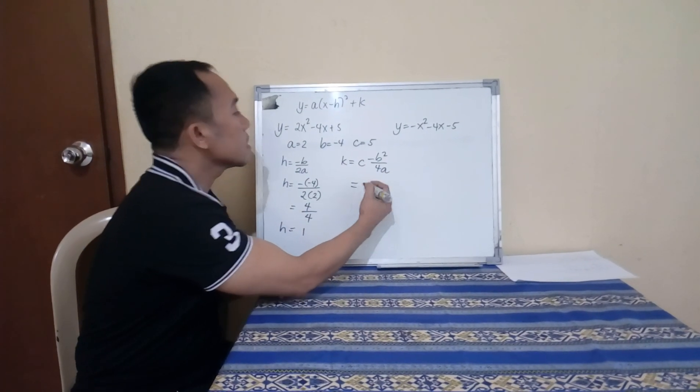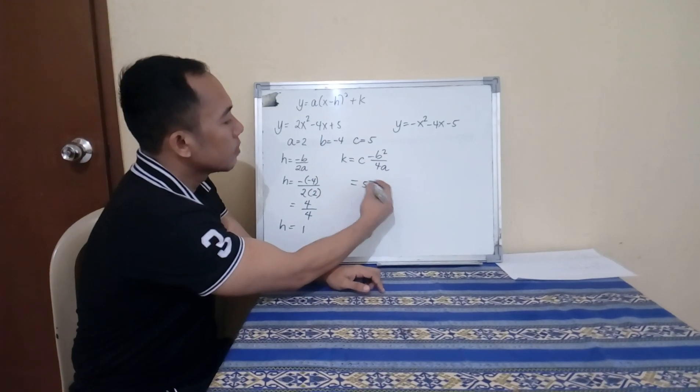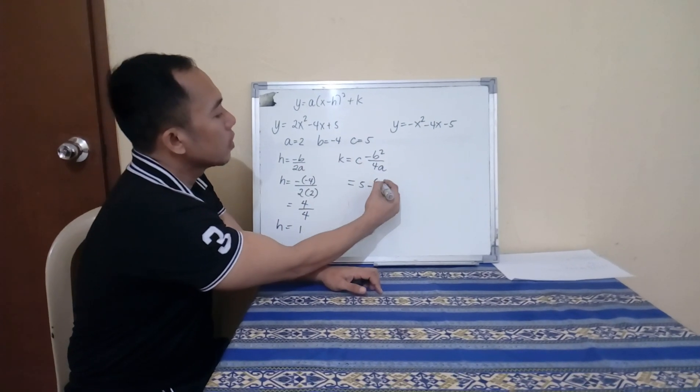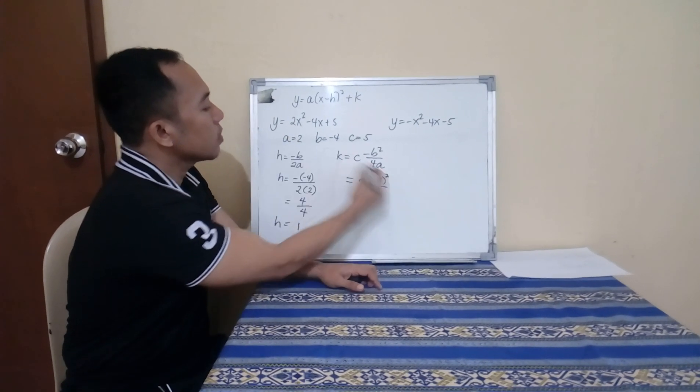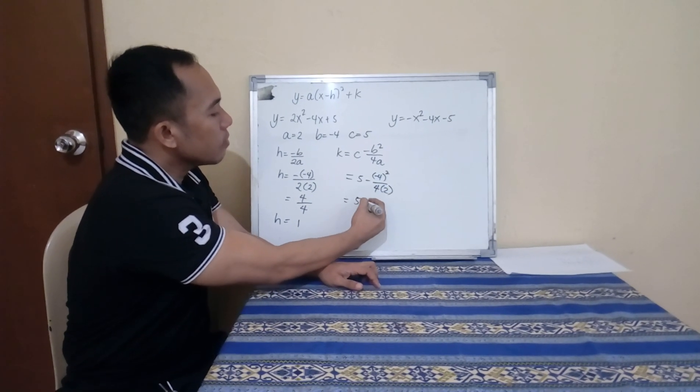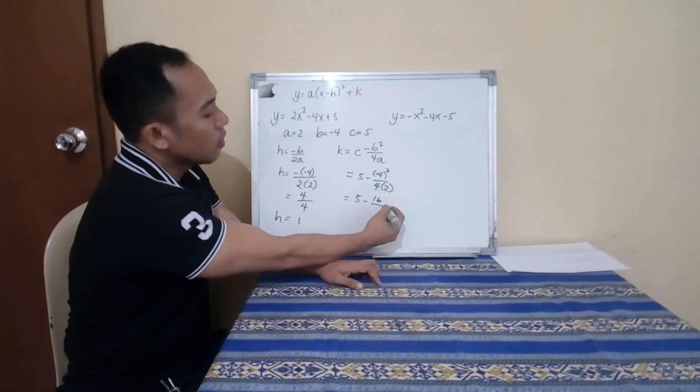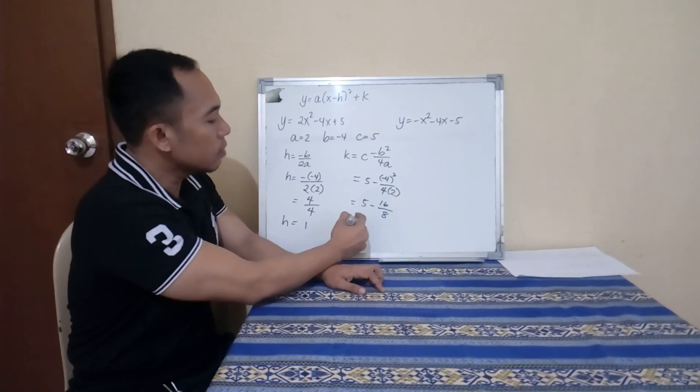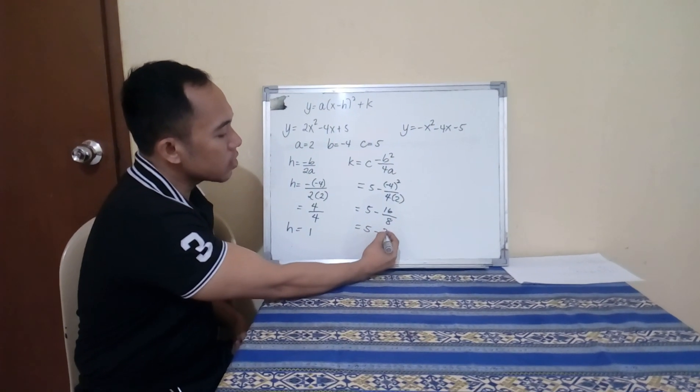What about for letter K? Your K is, substitute C which is 5, minus substitute B which is negative 4 squared, over 4 times substitute A which is 2. This is now 5 minus, square this, it becomes 16 over 4 times 2, which is 8. What is 16 divided by 8? That will give you 2. So 5 minus 2,